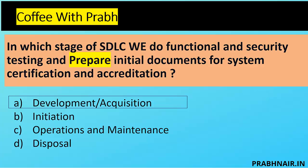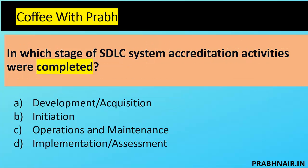The key word in the previous question was 'prepare' — not 'completed.' Next coffee shot: In which stage of the SDLC are system accreditation activities completed? Development/Acquisition is where we prepare; initiation is where we review. Operation and Maintenance comes after approval when the application rolls out to production. The closest option is Implementation/Assessment — that is where we obtain accreditation and perform migration to production. The answer is B.